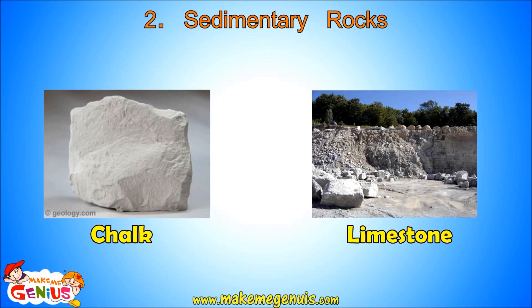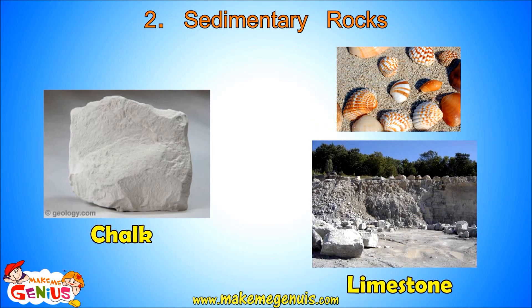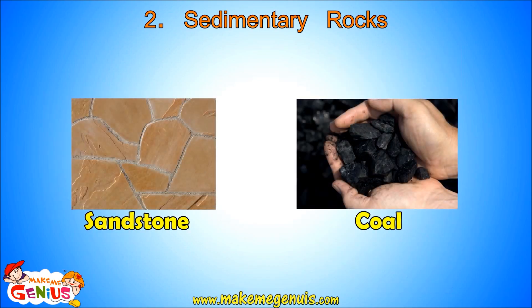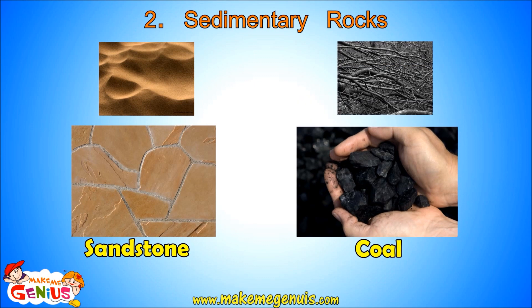Limestone and chalk are two kinds of sedimentary rocks. The type formed depends upon the sediments compressed during formation. For example, limestone is formed by the compression of skeletons and shells of marine animals in the sea. Sandstone is formed by the compression of sand. Coal is also a sedimentary rock — it is formed by the compression of dead trees and plants, also called fossils.